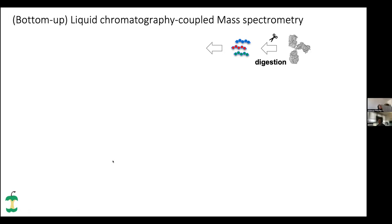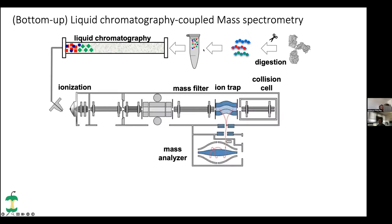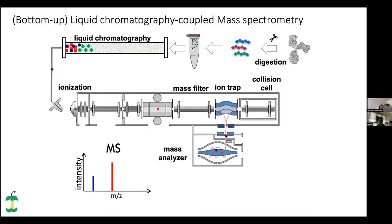The most common technique is liquid chromatography coupled mass spectrometry. You digest your sample with the proteins, put it into an Eppendorf tube, subject it to liquid chromatography to split peptides by physicochemical properties, ionize them, and put them into the mass spectrometer. The mass spectrometer measures ions based on their behavior in a magnetic field. What you get out is a mass spectrum showing intensity — related to the amount of ions — for a specific mass-to-charge ratio.